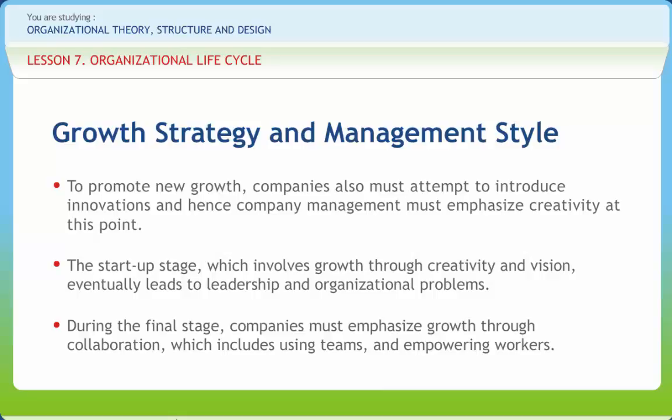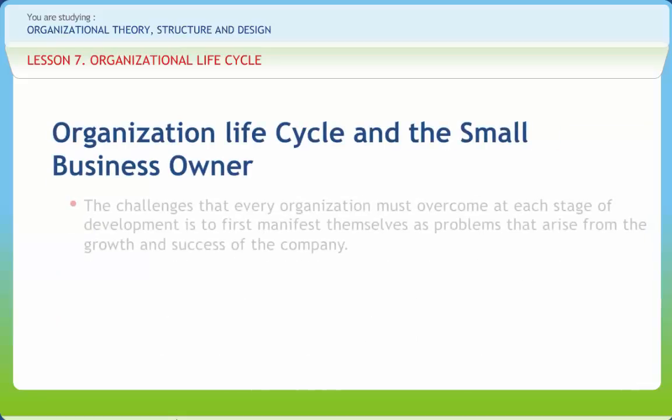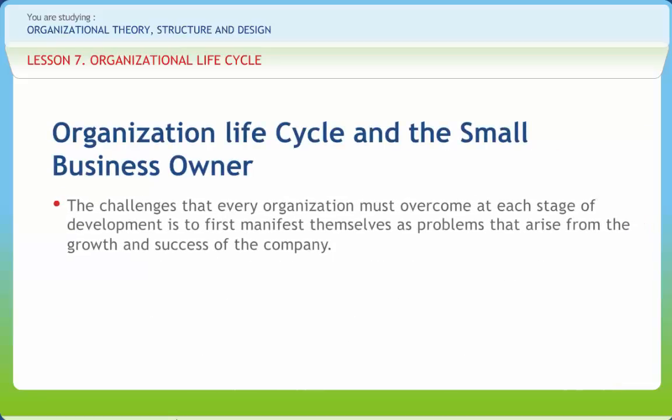During the final stage, companies must emphasize growth through collaboration, which includes using teams, empowering workers, removing red tape, reducing corporate staff, simplifying formal systems, increasing conferences and educational programs, and introducing more sophisticated information systems. The challenges that every organization must overcome at each stage of development first manifest themselves as problems that arise from the growth and success of the company, and from external changes in markets, competitors, technology, and the general business and political environment.